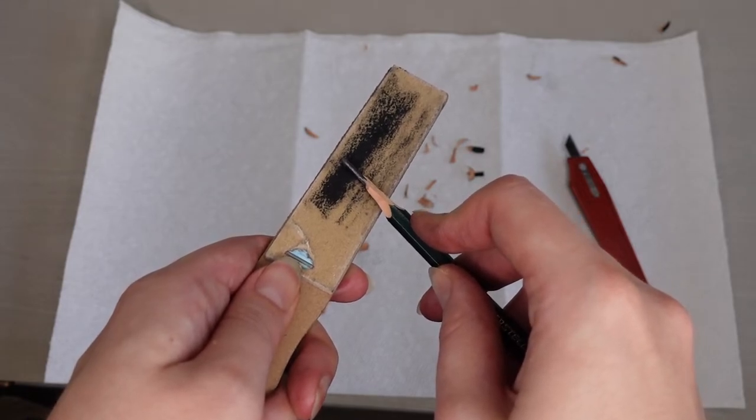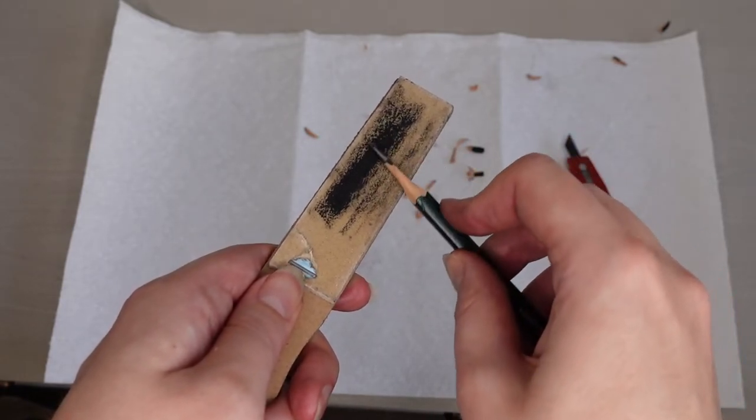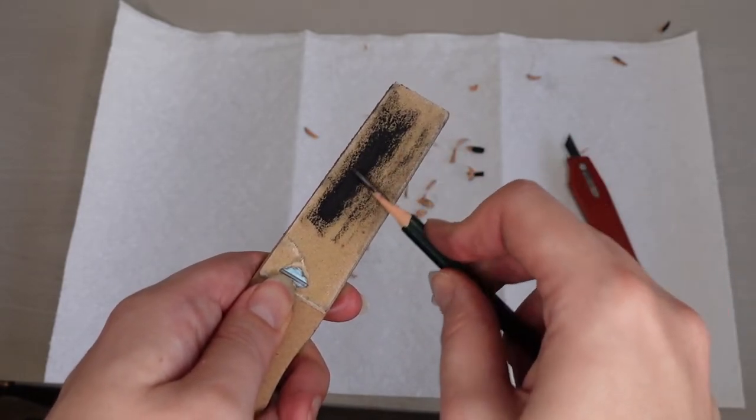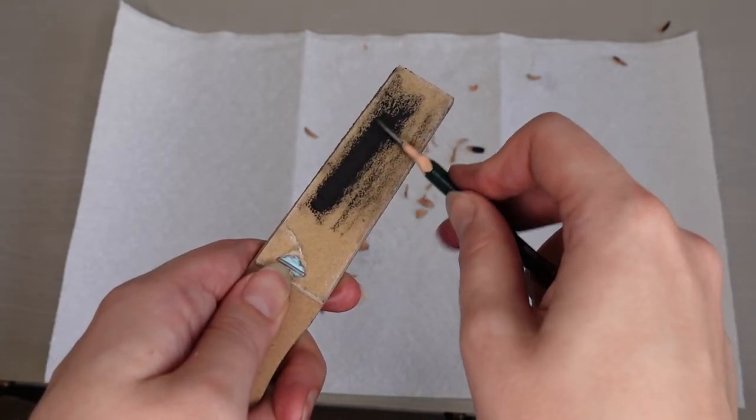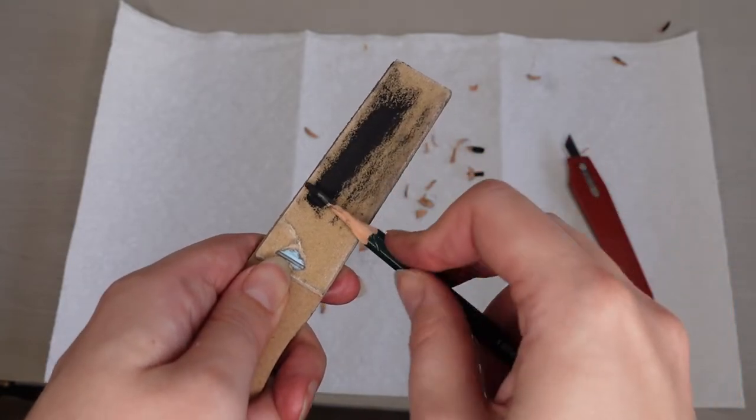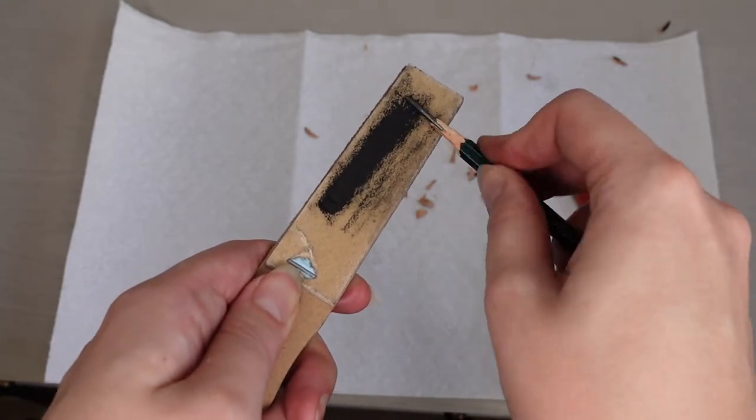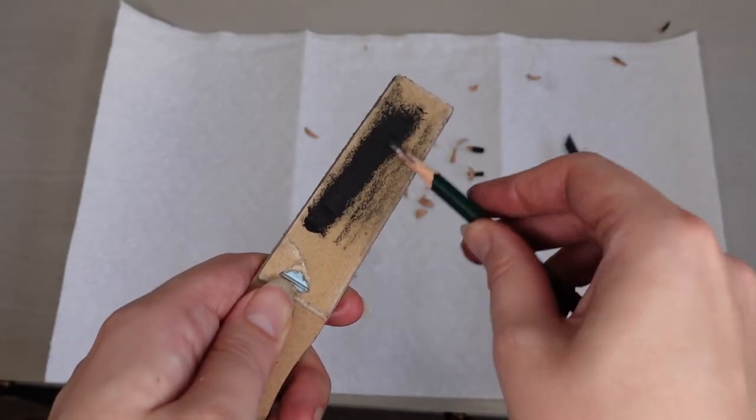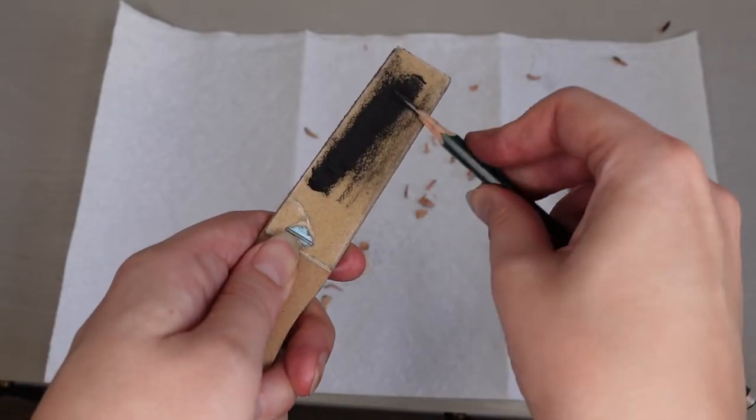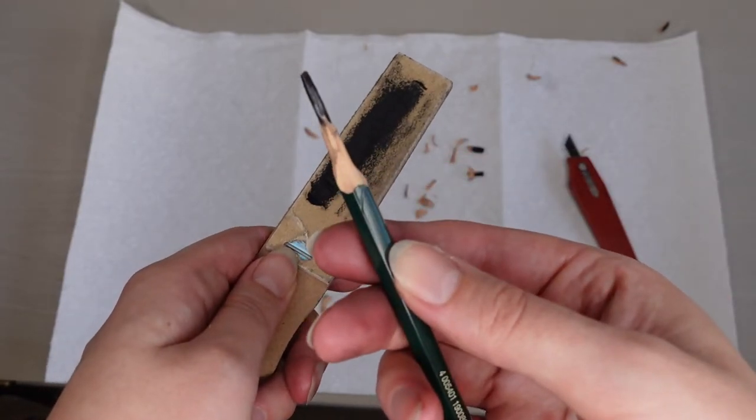But basically what you want to do is as you go back and forth, you twist the pencil in your hand so that you get a very smooth all the way around effect on your lead. And it also helps to sharpen the point. So you just go back and forth for a little bit and then you check it.